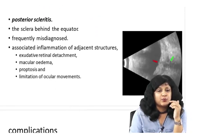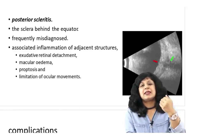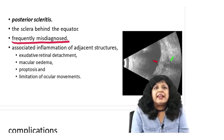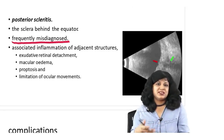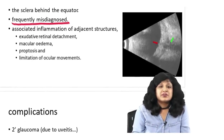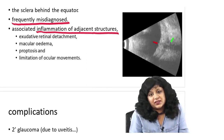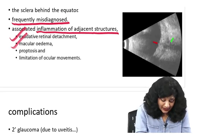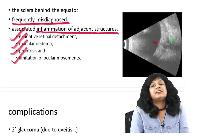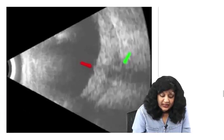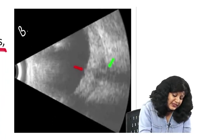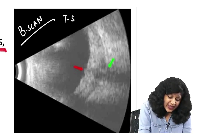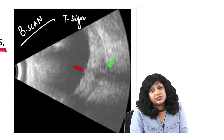Posterior scleritis means inflammation of the sclera lying behind the equator, and it is frequently misdiagnosed. Anterior scleritis diagnosis is not that challenging, but posterior scleritis diagnosis is quite challenging. It is associated with inflammation of adjacent structures: exudative retinal detachment, macular edema, proptosis, and also limitation of ocular movements. A very typical thing you get in cases of posterior scleritis: on B-scan ultrasound you get a typical T-sign.